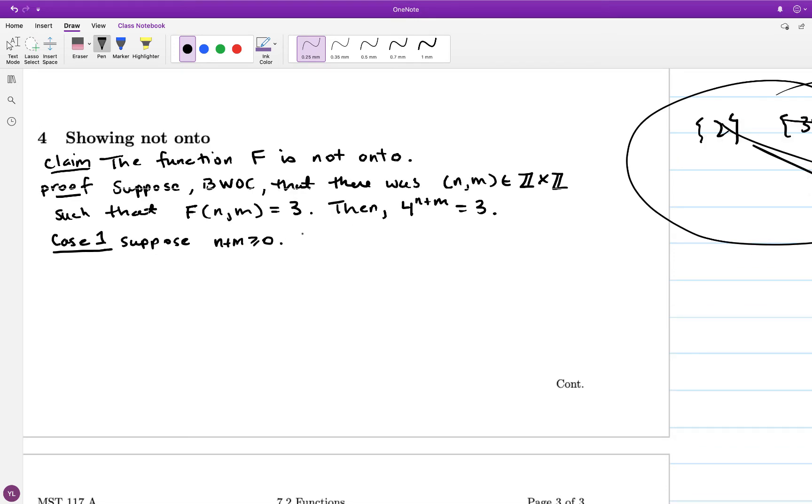First off, suppose that n + m, which is an integer, is greater than or equal to 0. Then on the left hand side, I'm looking at 4 to an integer power, well positive integer power. So it's either 4 to the 0, which is 1, or it's 4 to some integer greater than 1, which means the left hand side is fully factored into factors of 2.